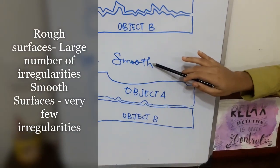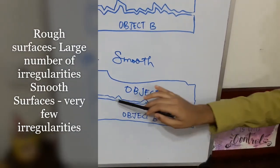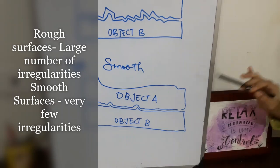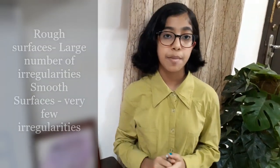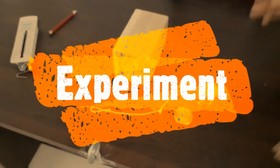On smooth surfaces, there are few irregularities, so the force of friction is less. Now let us learn this experimentally. Let us move on to the actual experiment.